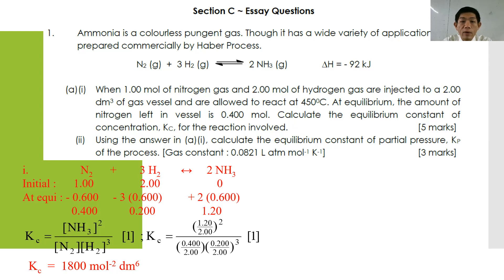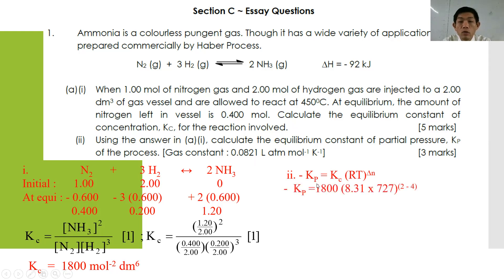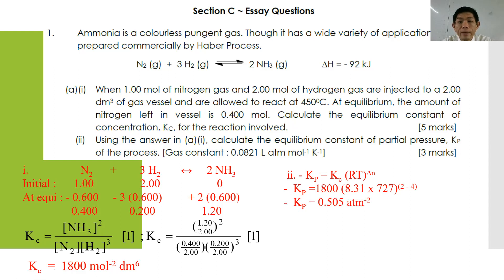For number 2, use the answer in A1 to calculate the equilibrium constant Kp. You have to use the relationship Kp = Kc(RT)^ΔN. The question already gives you R = 0.0821. So Kp = 1800 × 0.0821 × 727 K, with ΔN = 2 − 4 = −2. Pressing your calculator, you should get Kp = 0.505 atm⁻². That is how you solve question number 1A.